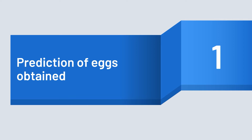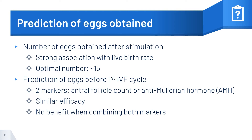Prediction of eggs obtained. The number of eggs obtained after ovarian stimulation is strongly associated with the live birth rate. The optimal number of eggs collected is 15. To predict the number of eggs before the first IVF cycle, there are two commonly used markers: the antral follicle count, which is determined on ultrasound, or anti-Müllerian hormone, which is a blood test. Both have similar efficacy, but there is no benefit when combining both markers.